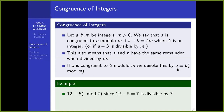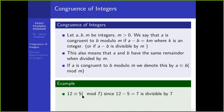Some examples to illustrate this: we can say that 12 is congruent to 5 modulo 7 because the difference between 12 and 5 is equal to 7, and it's divisible by 7.